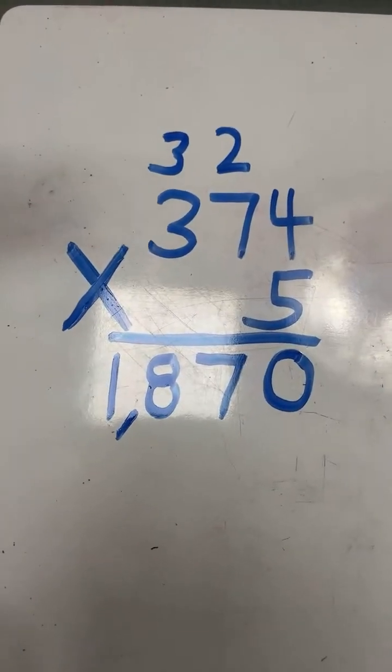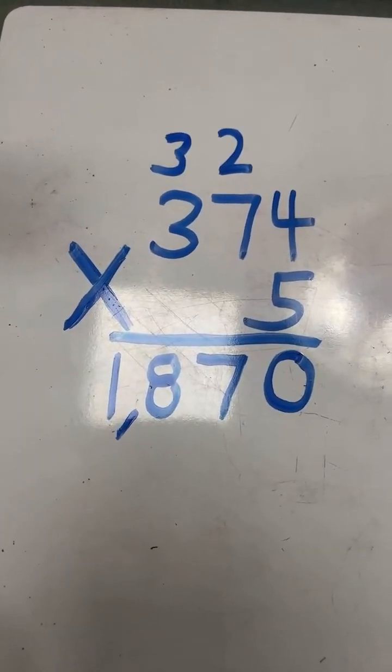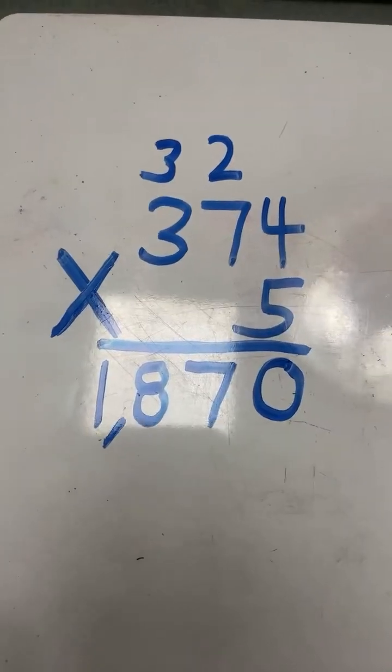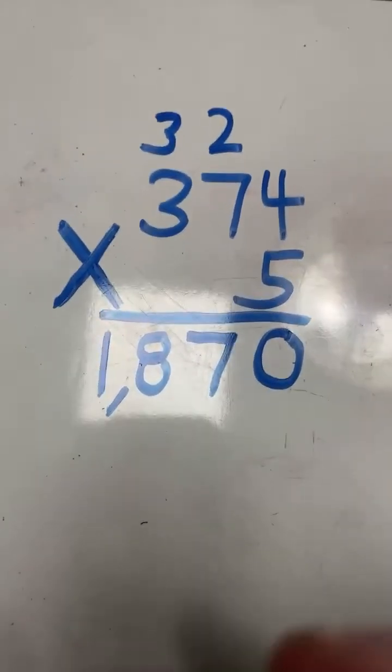And we have our final answer. 374 times 5 equals 1,870.